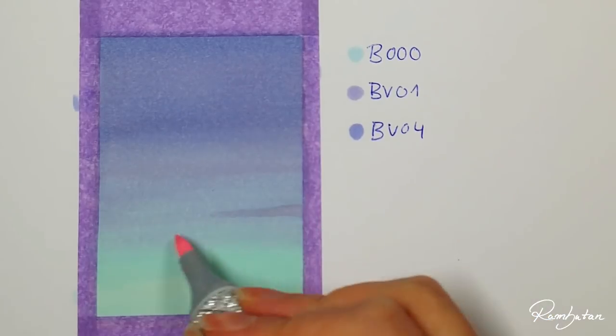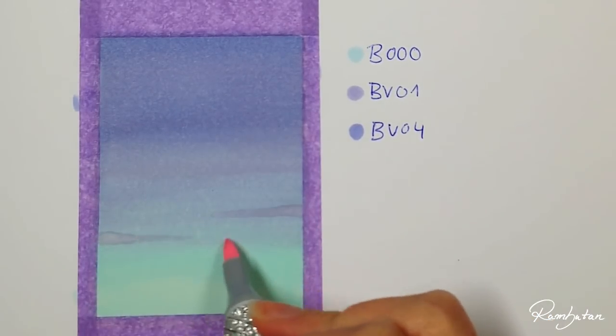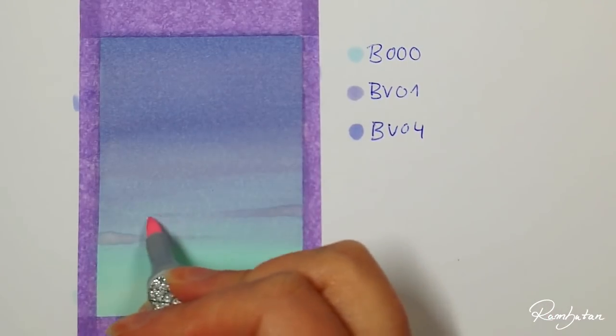For the fog I am using RV00 water lily, which is only available as a Copic sketch marker.